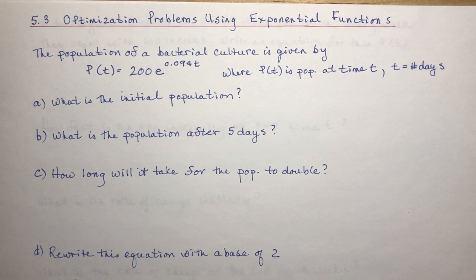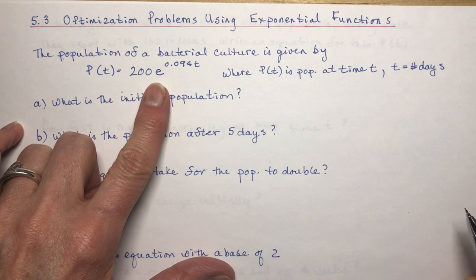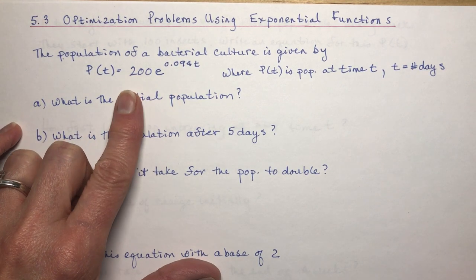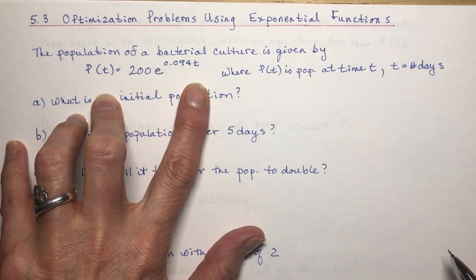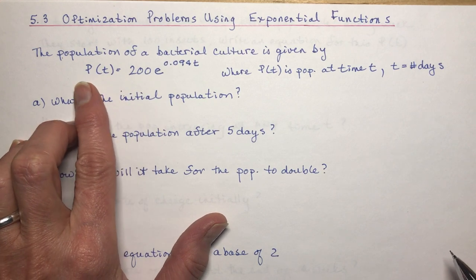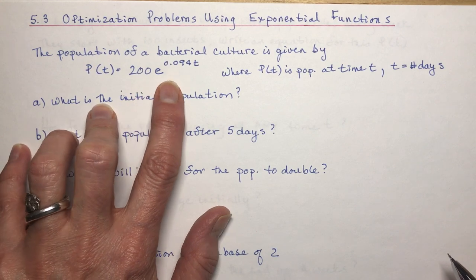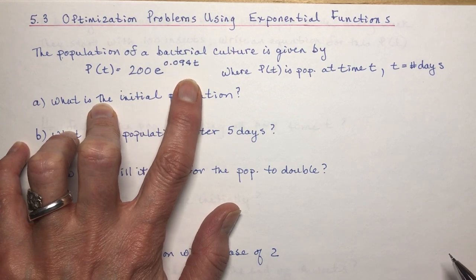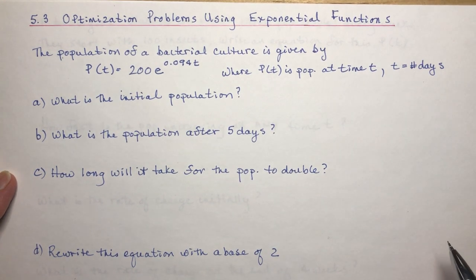Section 5.3 is optimization problems using exponential functions. Some of this should be familiar from exponential work, but in this case we're bringing in E. The population of a bacterial culture is given by P(t) = 200 times E to the 0.094t, where P(t) is population and t is the number of days.